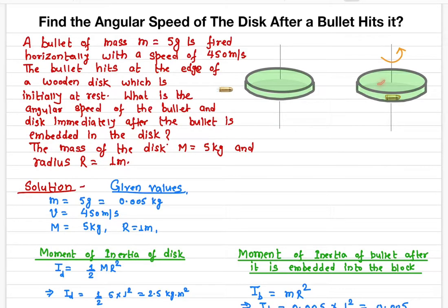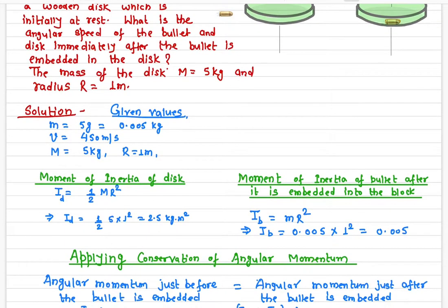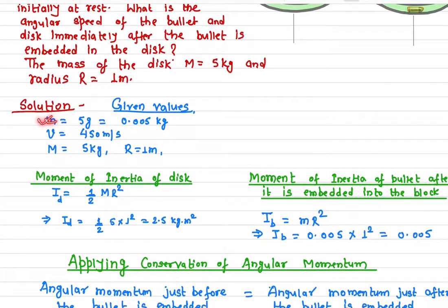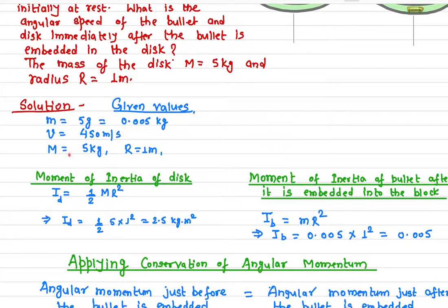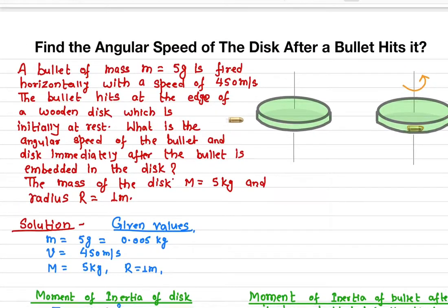The disk starts spinning about its axis of rotation. Once it starts revolving about its axis of rotation, we need to find the angular speed. Let's write down all the given information: the mass of the bullet, the bullet velocity, the mass of the disk, and the radius of the disk. First, we have to calculate the moment of inertia of the disk about this axis of rotation.